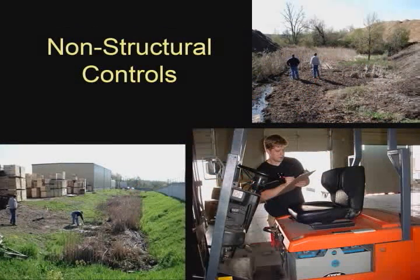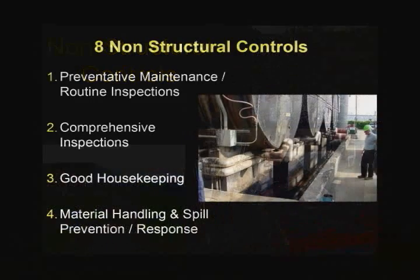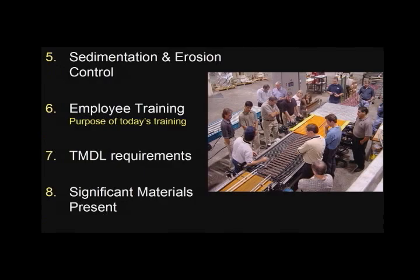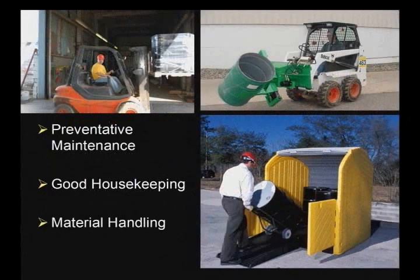Non-structural controls are practices that are relatively simple, fairly inexpensive, and applicable to a wide variety of industrial activities. These are activities undertaken by employees at your facility. There are eight non-structural controls required in the Stormwater Plan to prevent significant materials from coming into contact with stormwater runoff. They are preventative maintenance, comprehensive inspections, good housekeeping, material handling including spill prevention and response, sedimentation and erosion control, employee training, complying with total maximum daily load requirements, and a list of significant materials expected to be present following non-structural control implementation.